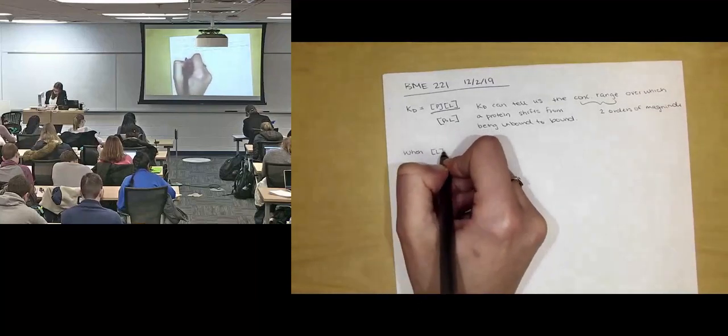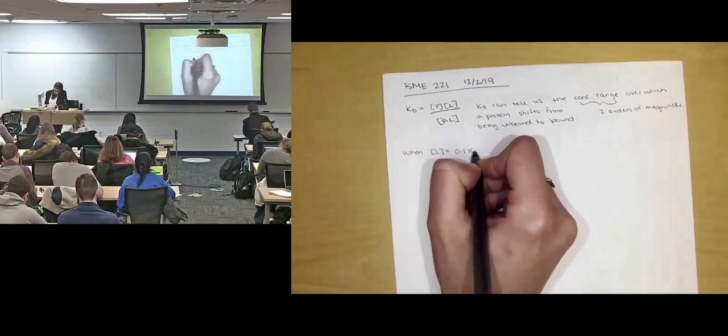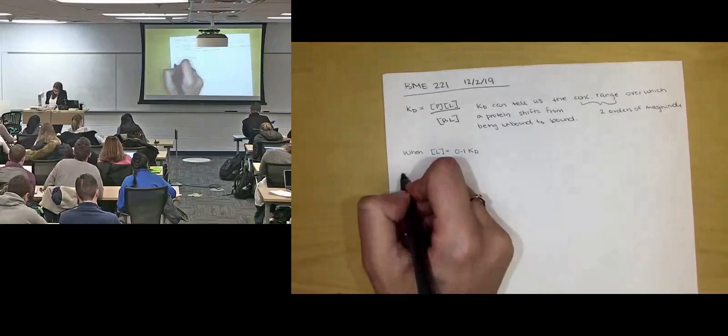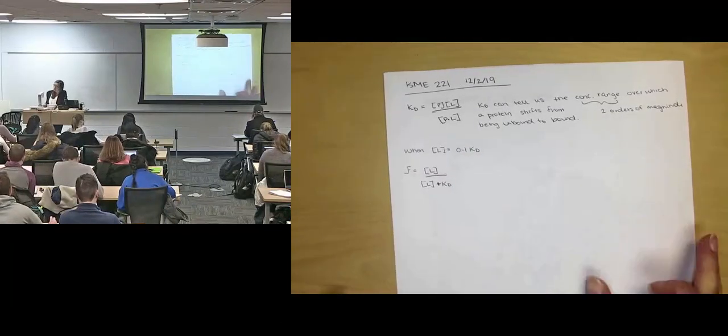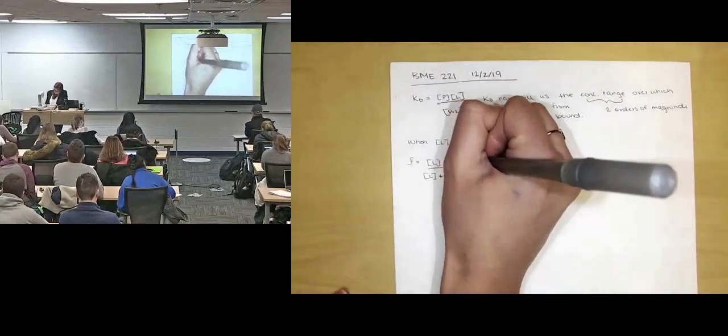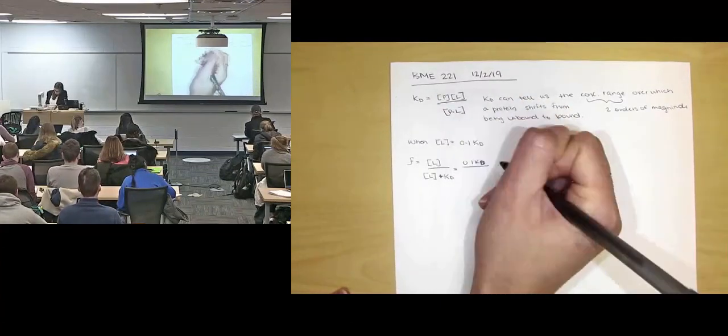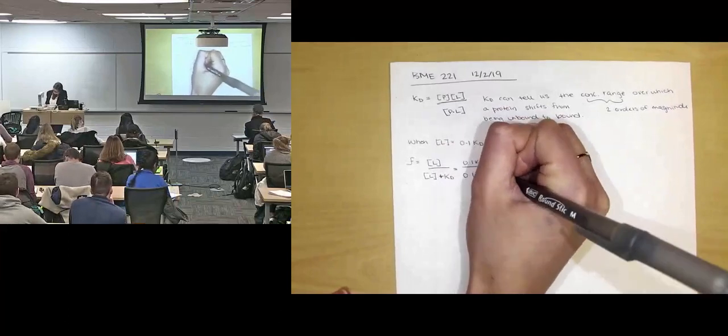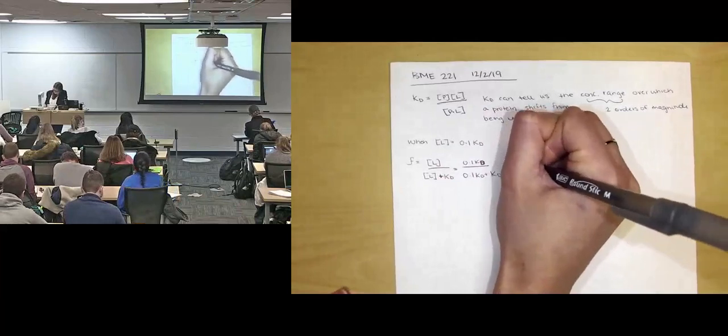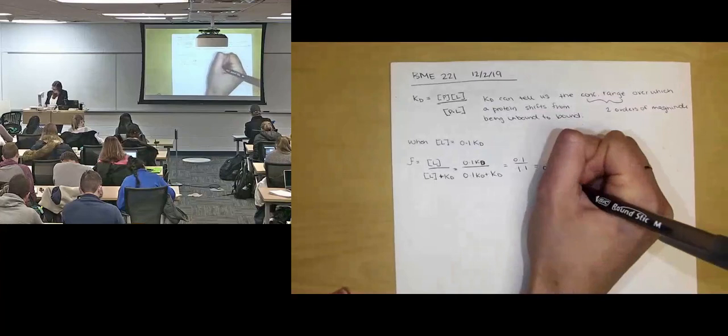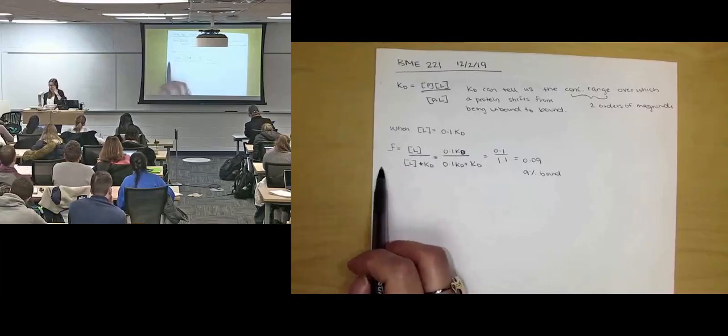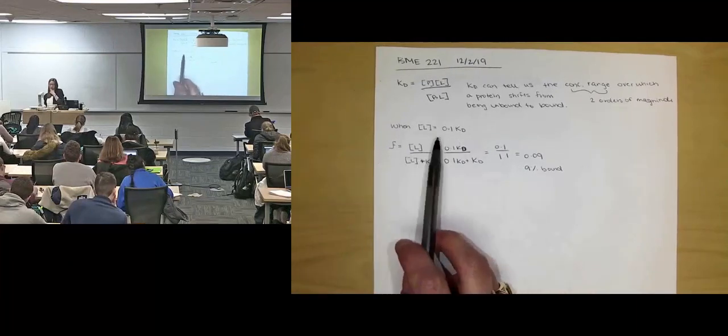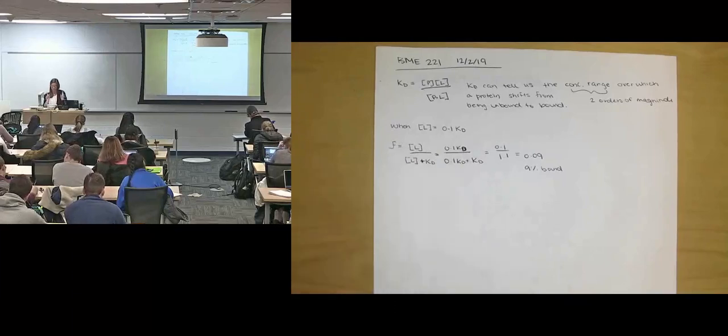So when the concentration of ligand is equal to one-tenth the dissociation constant, 0.1 times KD, remember that fractional saturation is equal to ligand concentration over ligand concentration plus dissociation constant. So if you plug this in, you have 0.1 KD over 0.1 KD plus KD. This is going to be equal to 0.1 over 1.1, which equals 0.09, or about 9% will be bound. So about 9% of your proteins are bound when you're at a ligand concentration one-tenth of the dissociation constant for that particular pair of protein to ligand.